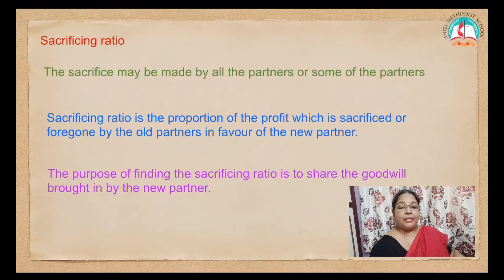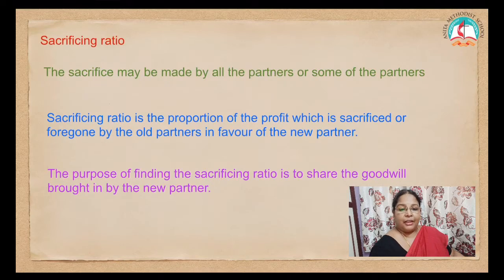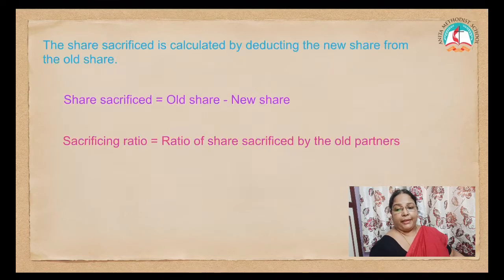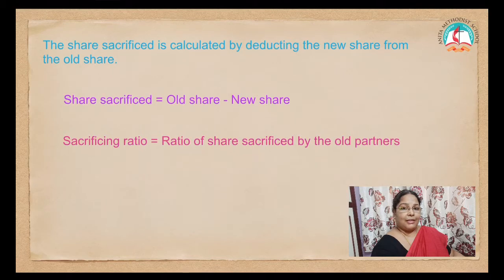Sacrificing ratio: the sacrifice may be made by all the partners or some of the partners. Sacrificing ratio is the proportion of the profit which is sacrificed or forgone by the old partners in favor of the new partner. The purpose of finding the sacrificing ratio is to share the goodwill brought in by the new partner. The sacrificing ratio can be found as old share minus new share, or old ratio minus new ratio.